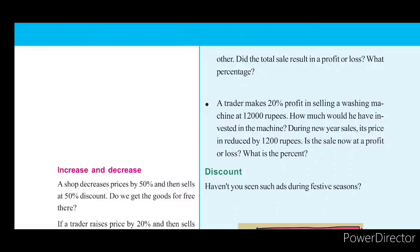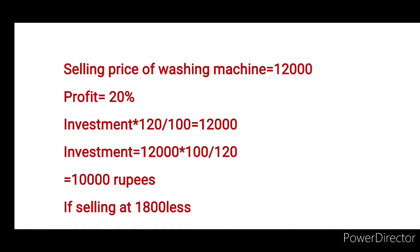The washing machine is 100. The profit is 20%. The investment is 120 by 100. The selling price is 12,000 rupees. The investment is equal to 12,000 multiplied by 100 by 120.